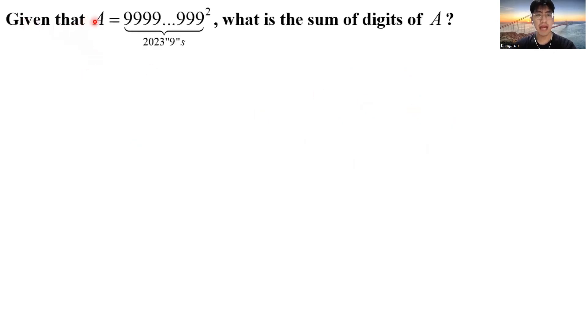Welcome back to our channel. I'm teacher Cedric, and today we are going to look at some number theory problems from the RI exam this year, the year 2023. Let us start with the first question. Given that A equals 2,023 nines with a square, what is the sum of digits of A?